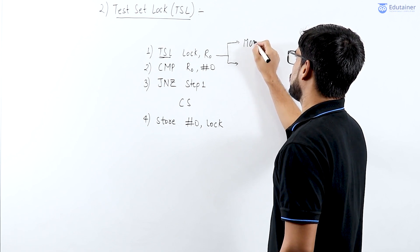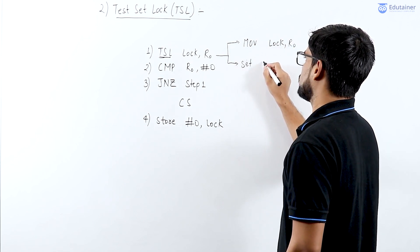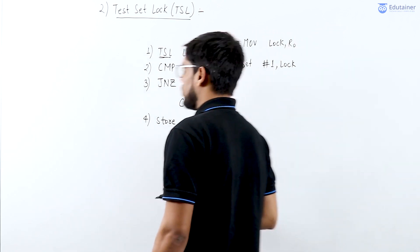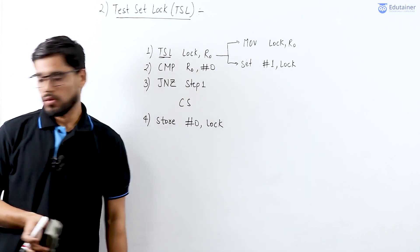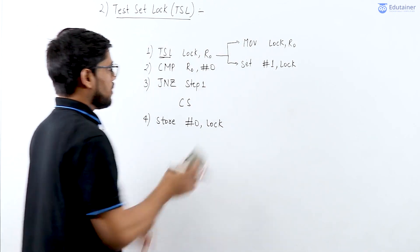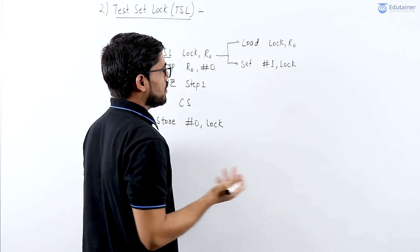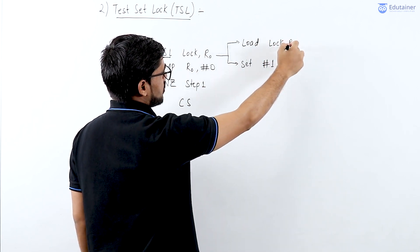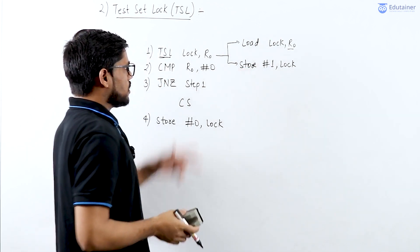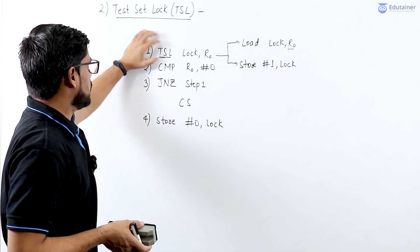The two operations from lock variable are: first, move (or load) the lock value into register R0; and second, set (or store) the value 1 to lock. These two operations are combined into a single atomic operation, and based on this single atomic operation we get many advantages in the Test-Set Lock solution.